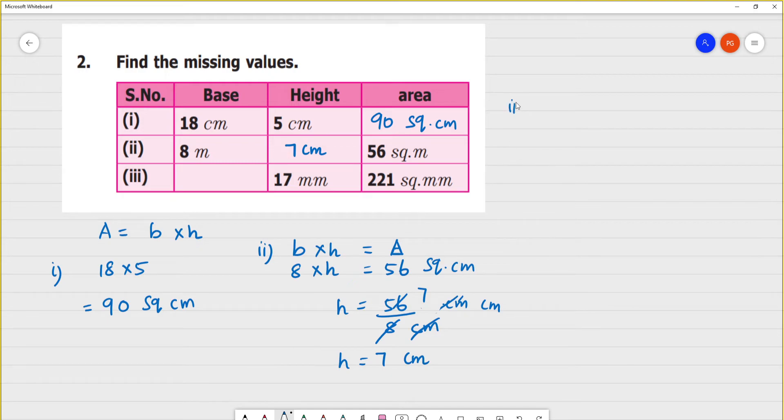Next, third one. Base into height is equal to area. The area is 221 square millimeters. So, the base is equal to 221 square millimeters divided by 17 millimeters.